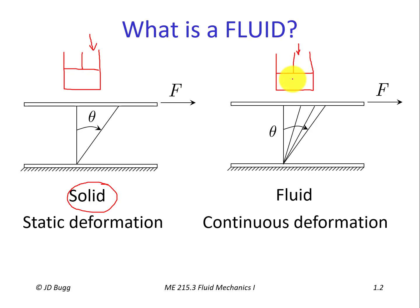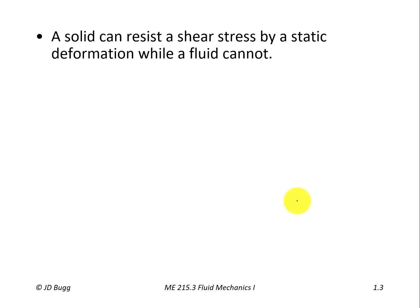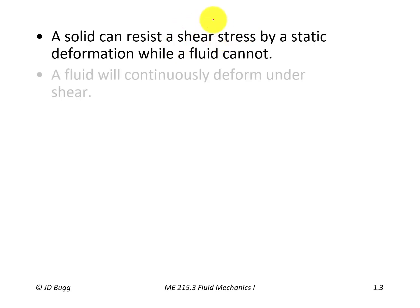Both fluids and solids can resist a compressive force with a static deformation. But for a shear force they are different: a solid can resist a shear force with a static deformation, while a fluid must undergo continuous deformation to resist a shear force. That is the real difference. A solid can resist shear stress by a static deformation, while a fluid cannot — a fluid will continuously deform under shear.